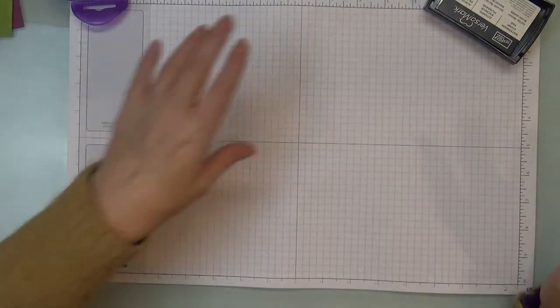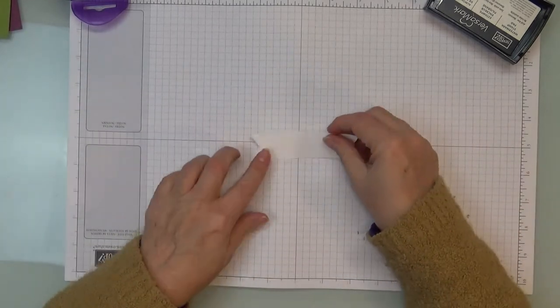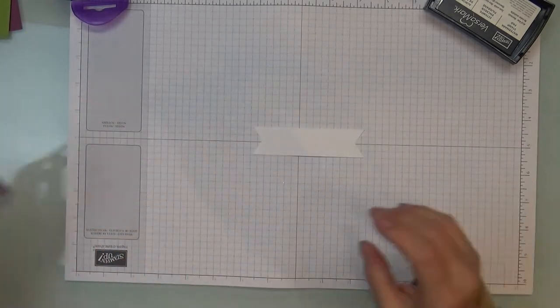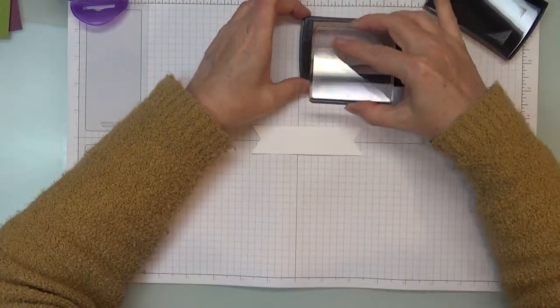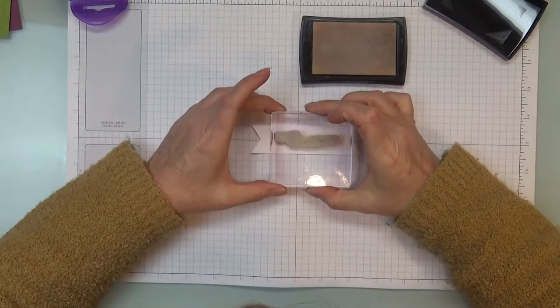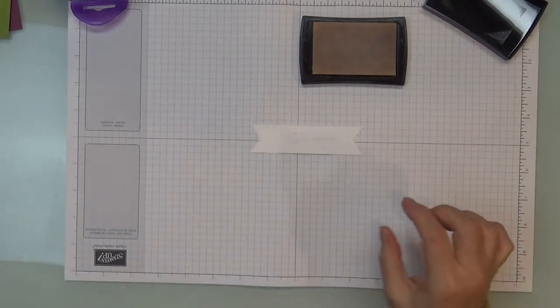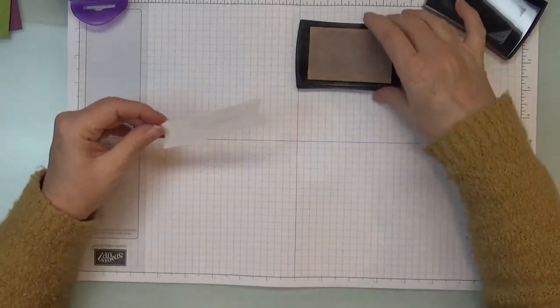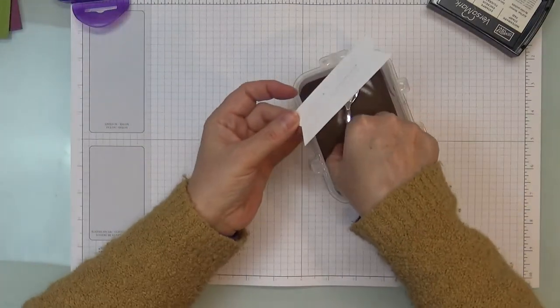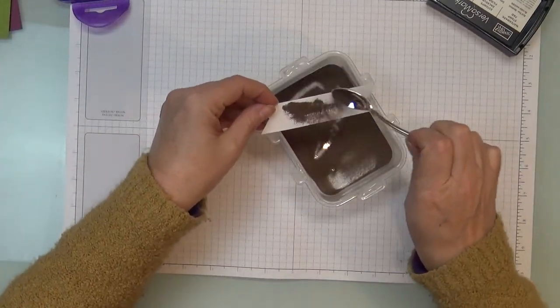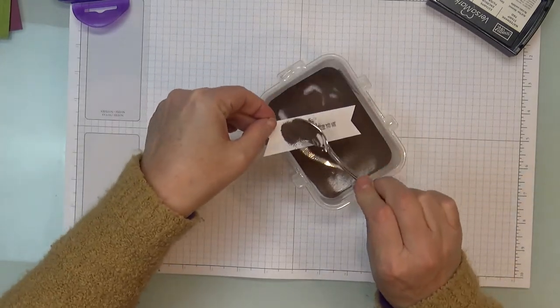And now while the heat tool is still nice and warm, I'm going to go ahead and do the sentiment really quick. So I'm just going to ink that up in Versamark. Get it as centered as I can on my piece of paper. And as you can see, it's showing a little bit of the Rich Razzleberry. I tried to clean it really well before I did this, but it won't show through once we do the embossing. And I'll just cover that right up.